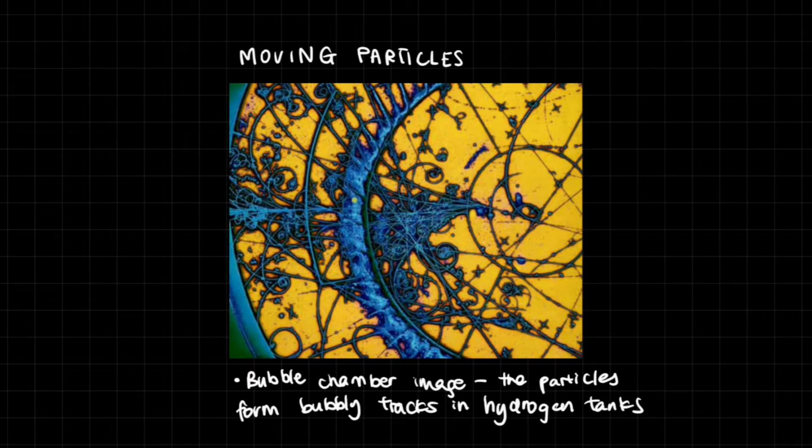You can see these are the individual tracks of all these particles. Some of them are extremely small spirals, some are bigger spirals, some are absolutely huge. So why do they make spirals in the first place? How do we figure out which one is which? That's what we're going to learn about in today's video.